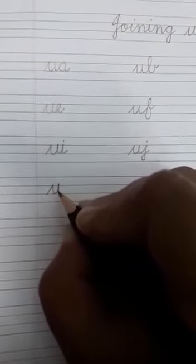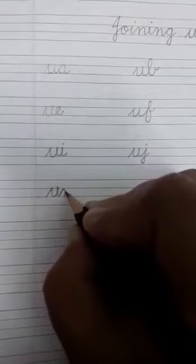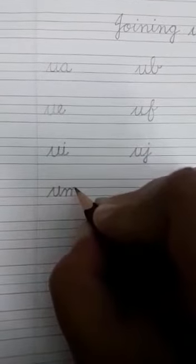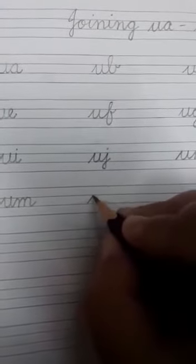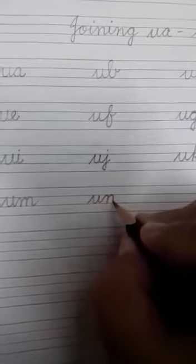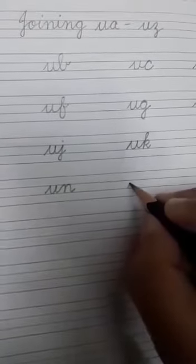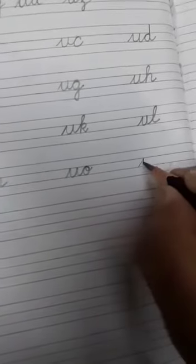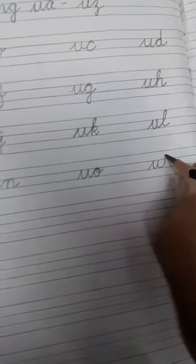U-M. Then M, children, you have to do it very beautifully. Then after M you will join U with N. What comes after N? O. U-O. After U-O we will write U-P.